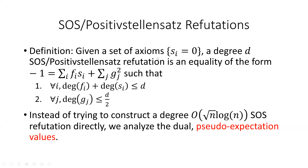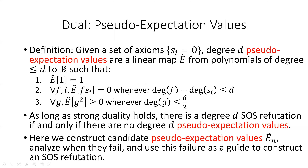Instead of trying to construct such an equality directly, I will analyze the dual, which is pseudo expectation values. Given a set of axioms S_i = 0, degree d pseudo expectation values are a linear map Ẽ from polynomials of degree at most d to the reals, such that Ẽ(1) = 1; for all polynomials f and all i, Ẽ(f · S_i) = 0 whenever the degree of f plus the degree of S_i is at most d; and for all polynomials g, Ẽ(g²) ≥ 0 whenever the degree of g is at most d/2. As long as strong duality holds, there is a degree d sum of squares refutation if and only if there are no degree d pseudo expectation values.